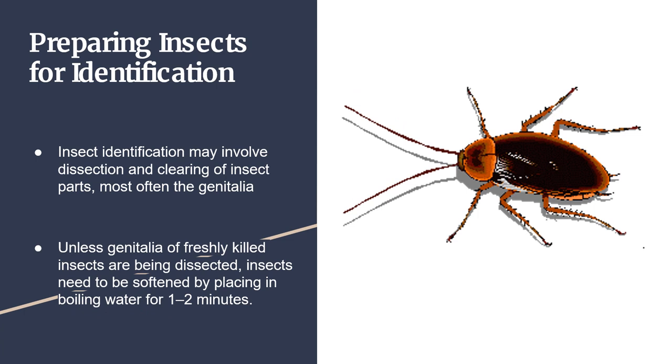Unless genitalia of freshly killed insects are being dissected, insects need to be softened by placing in boiling water for one to two minutes.